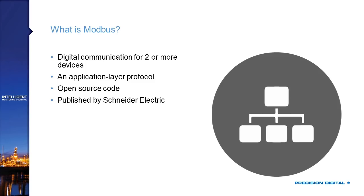The first question we have to answer is: what is Modbus? Modbus is a digital communication protocol for two or more devices to talk to one another. It's an application layer protocol, meaning it is a system that runs software on a device. Modbus does not define what voltage equals a one or zero — it merely defines the software executing on a Modbus device in order to function.